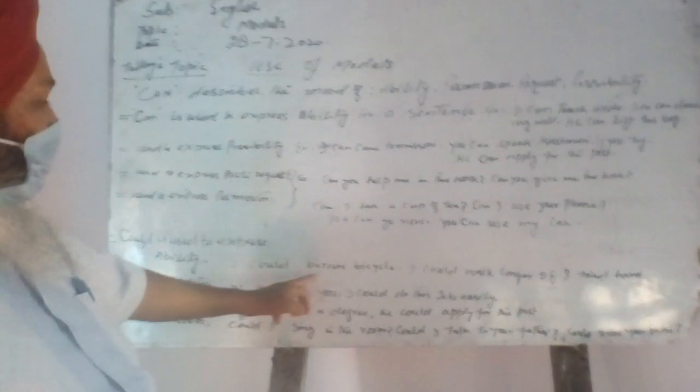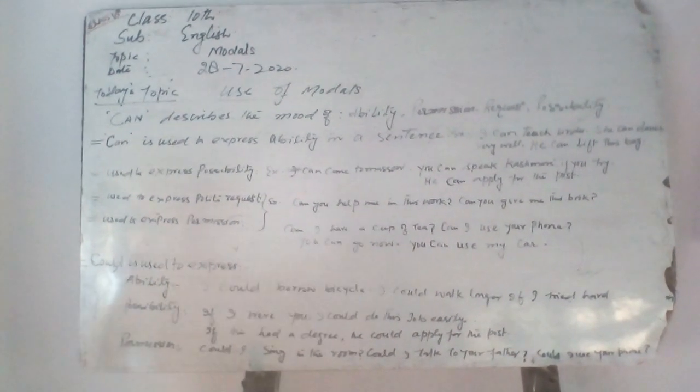Could is used for conditionals and hypothetical situations. For example: 'I could borrow a bicycle.' 'I could walk longer if I tried hard.' 'If I were you, I could do this job easily.' 'If he had a degree, he could apply for the post.'